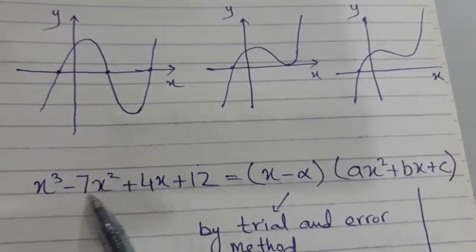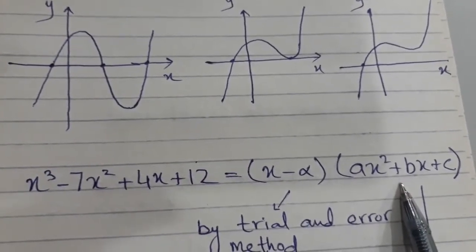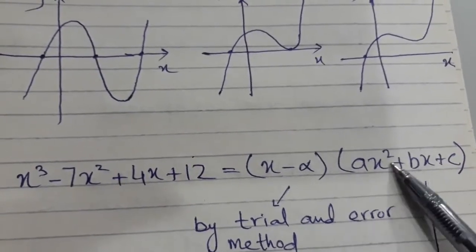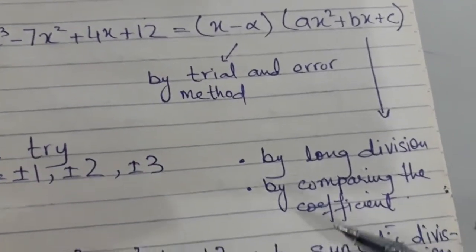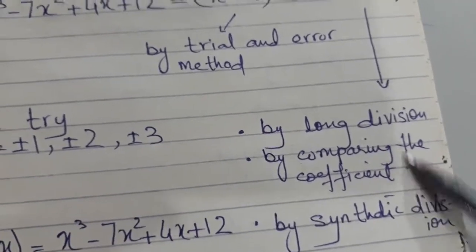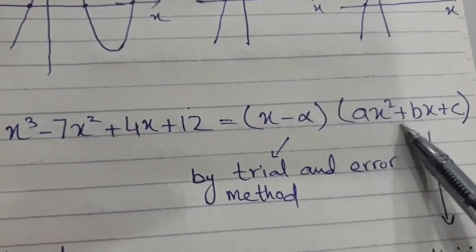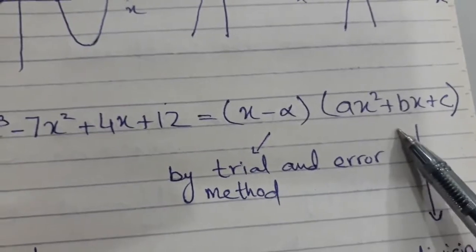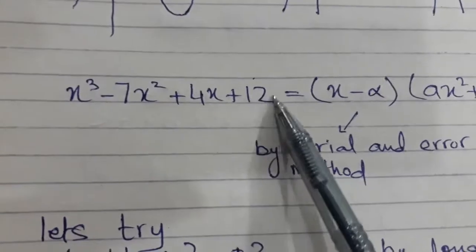In general, when writing cubic equation factors, we write one linear factor and one quadratic factor. The linear factor is found by trial and error. The quadratic factor can be found by three methods: comparing the coefficient method, long division, and synthetic division. I will teach all three methods here.